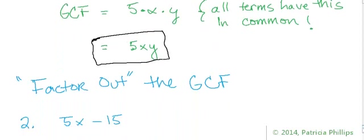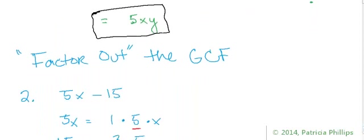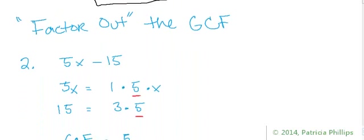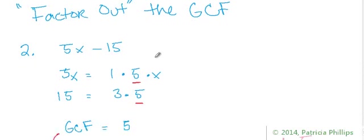Now let's look at the second kind of question you will run into. The second question says 'factor out the greatest common factor.' In this problem, we're going to have to do something after we find the greatest common factor. Let's say the question says: factor out the greatest common factor from 5x minus 15.